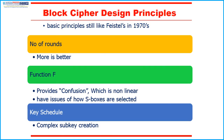The cryptographic strength of a Feistal cipher derives from three aspects of the design: the number of rounds, the function F, and the key schedule algorithm. The greater the number of rounds, the more difficult it is to perform cryptanalysis, even for a relatively weak F. The function F provides the element of confusion in a Feistal cipher, and it should be difficult to unscramble the substitution performed by F. One obvious criterion is that F be non-linear. One of the most intense areas of research in symmetric block cipher design is S-box design — any change to the input vector to an S-box should result in random-looking changes to the output. The final area is the key schedule algorithm: with any Feistal block cipher, the key schedule is used to generate a sub-key for each round.